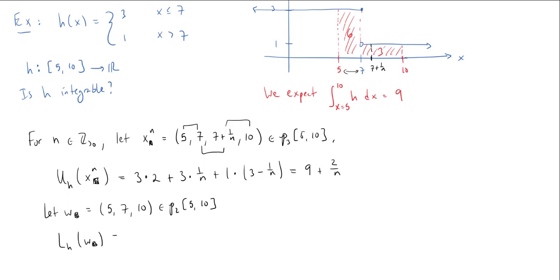Let me compute the lower sum for w. Between 5 and 7, the infimum—well it's just a constant function—so the infimum is the supremum, just equal to the value of h, so this is still 3. The width is still 7 - 5 = 2.